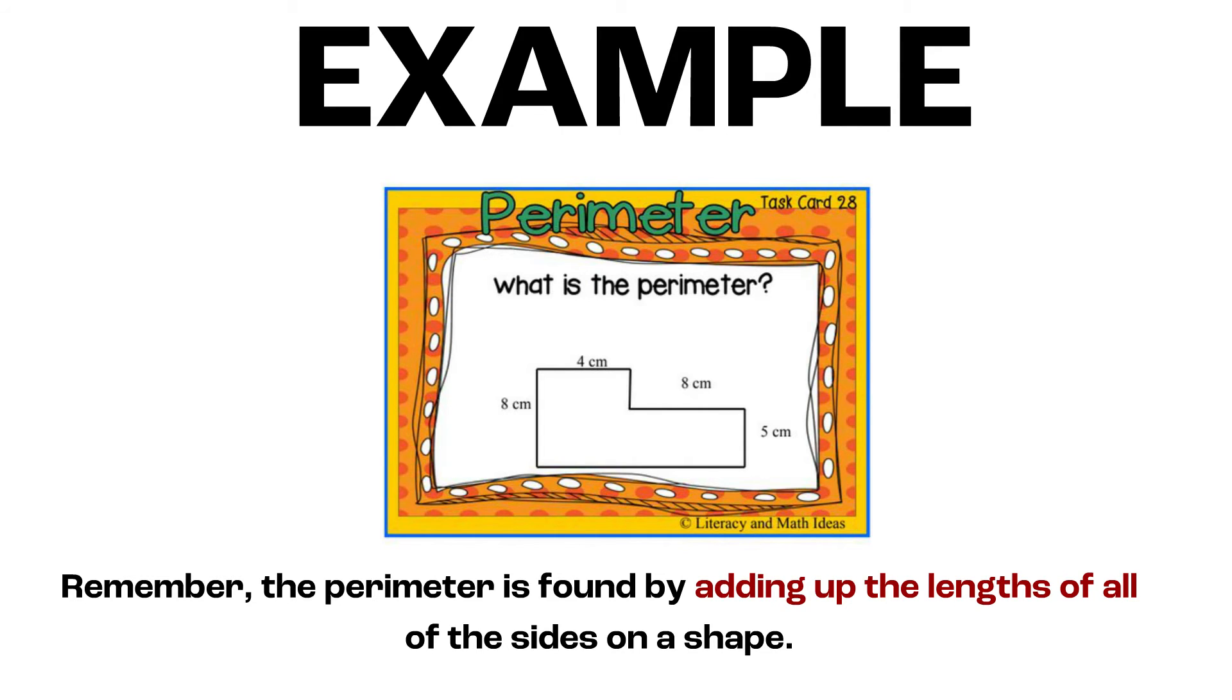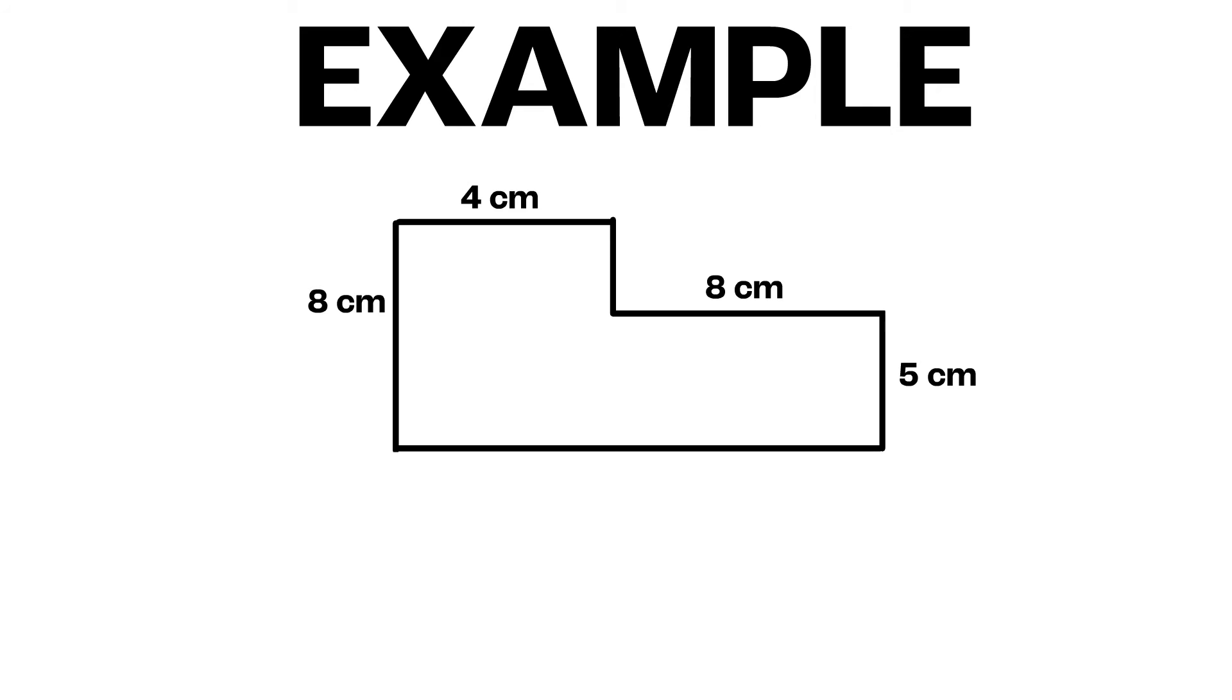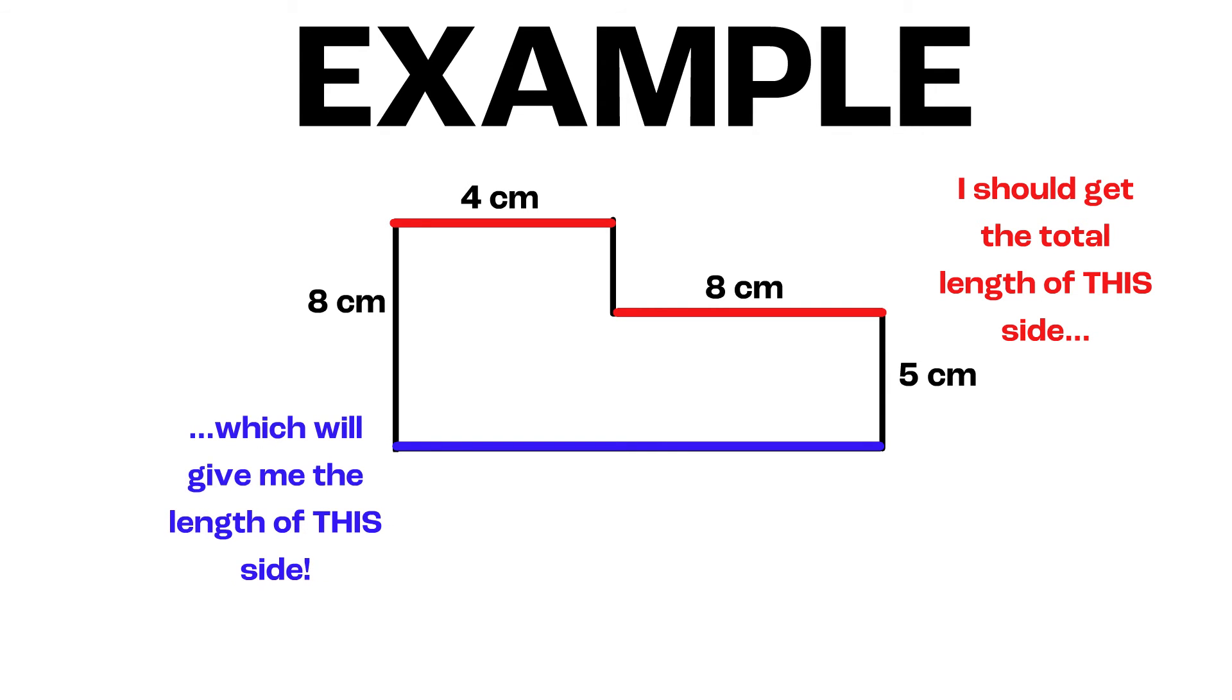But for this shape, we are missing a few side lengths, so how will we find the perimeter? We can still find the perimeter by carefully looking at the other sides. Let's start with this long side. If we compare both sides of the shape, we can see that they appear to be equal in length. If I add up the two lengths given on this side of the shape, I should get the total length of the side, which will tell me the length of this side. Let's do it.